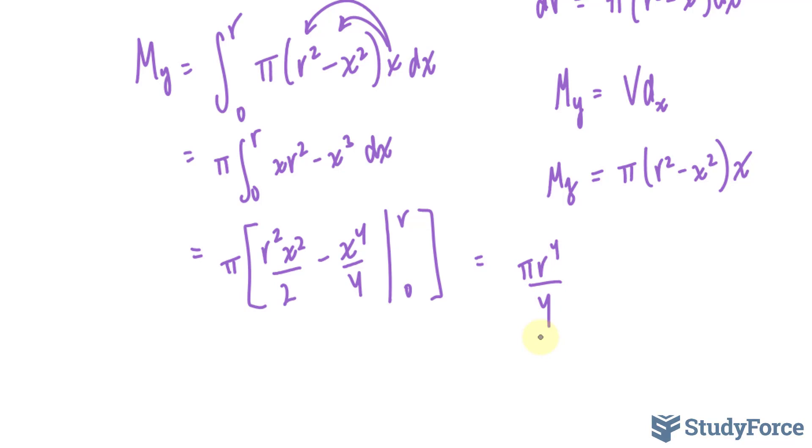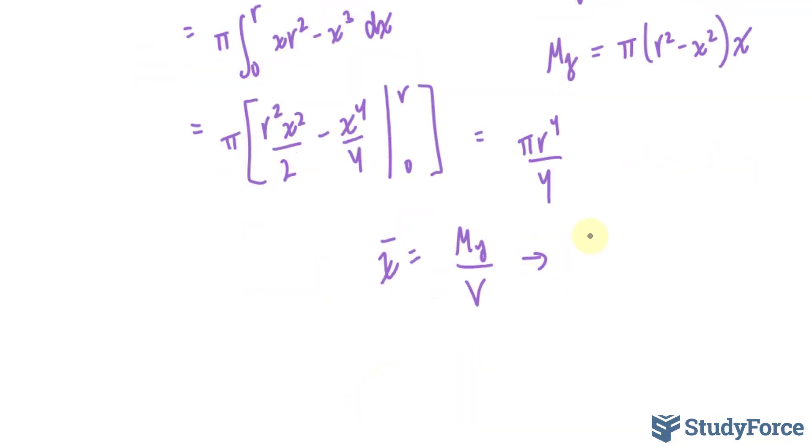And you can confirm that on your own by doing some work on the side. Now that we've found My, we can actually go ahead and find the distance of the centroid along the x-axis, so the x-coordinate of the centroid. And that is equal to My over volume. Because remember, moment is equal to volume times the distance to the axis. Now since this is My, it will give us the perpendicular distance, which is the x-coordinate.